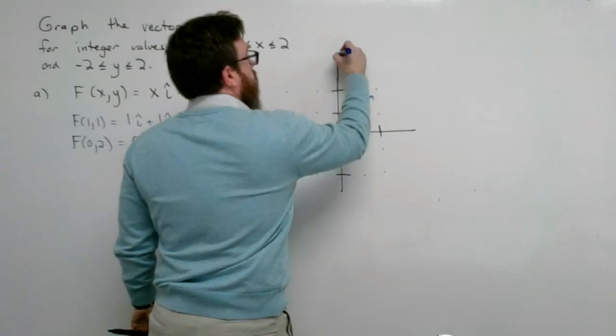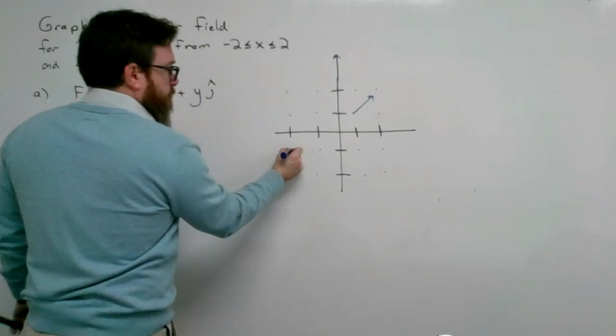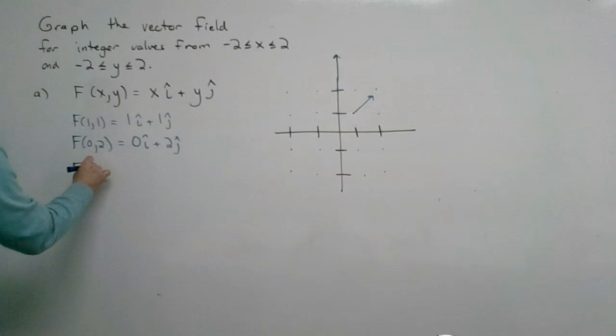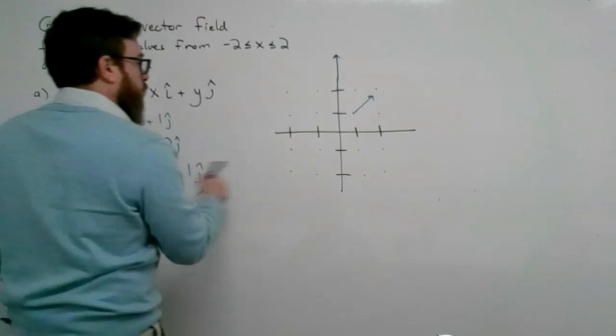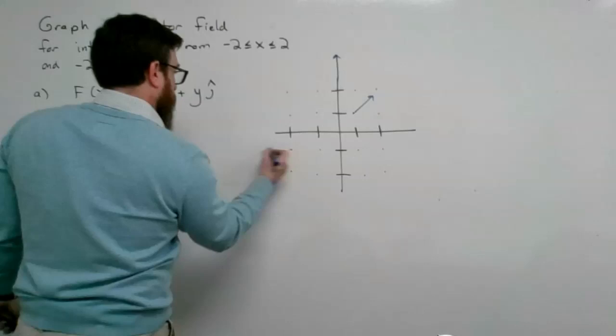For the point (-2, -1), x is -2 and y is -1. So F(-2, -1) gives -2 in the x direction and -1 in the y direction.